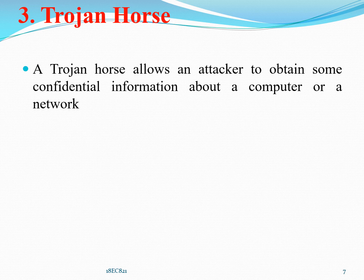For example, there is a Trojan horse. A Trojan horse is a hidden piece of code, like a virus. The purpose of a Trojan horse is different — the main purpose of a virus is to make some sort of modifications to the target computer or network. But a Trojan horse attempts to reveal confidential information to an attacker. That is why you can define it like this: a Trojan horse allows an attacker to obtain some confidential information about a computer or a network.